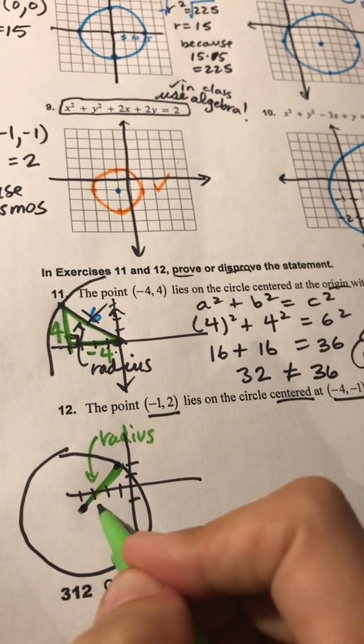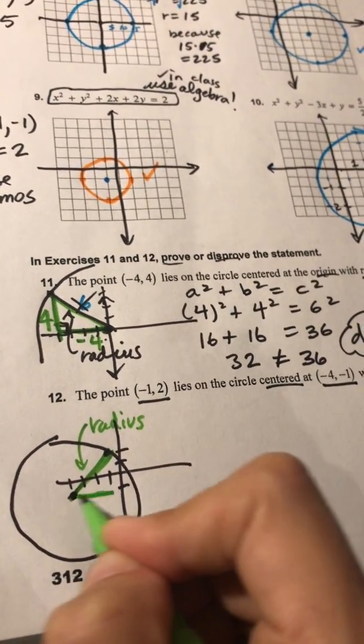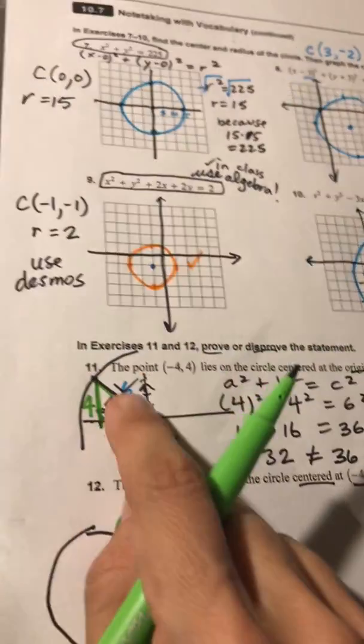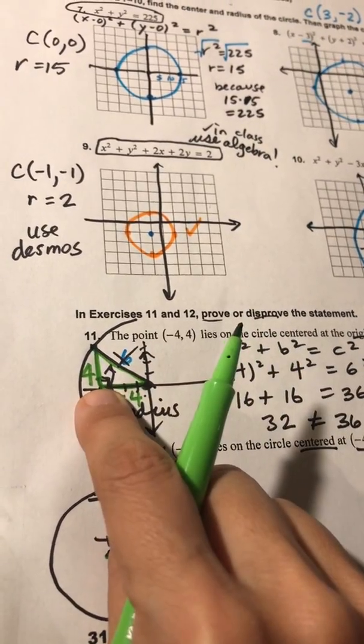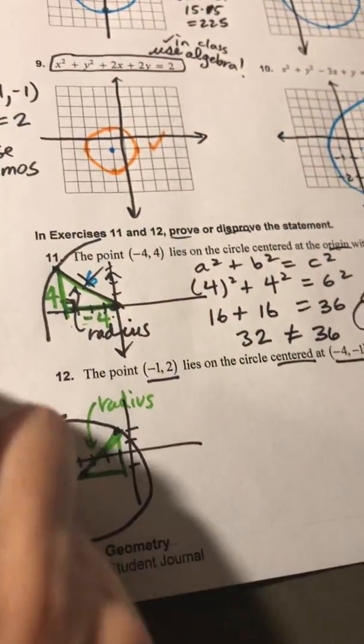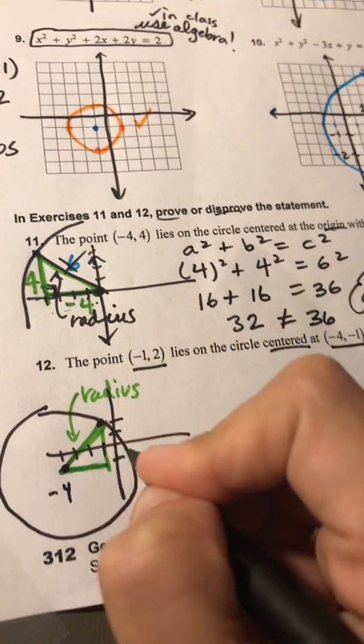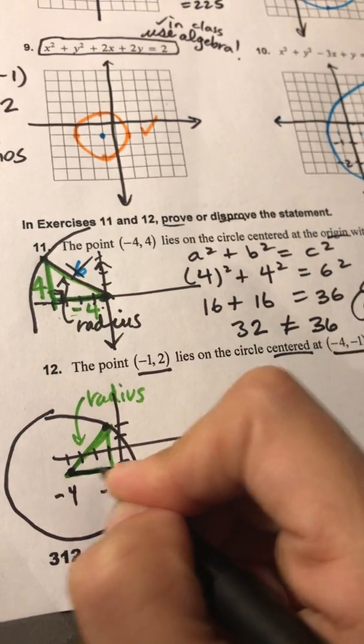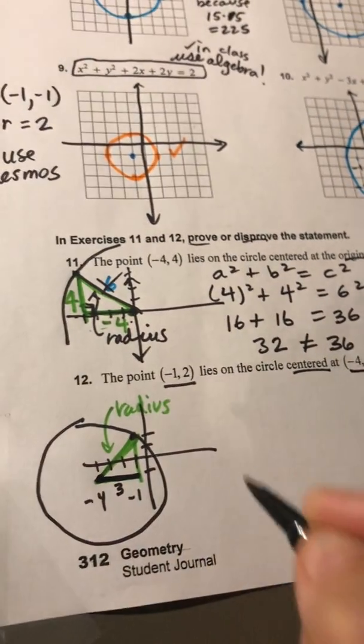So if I had graph paper, I could probably tell you how far apart these are and use the same kind of idea here. It was easier here because we started at the origin. So I knew this went back 4, up 4. Here, I'm at the point negative 4 on my grid, and here I'm at the point negative 1 on my grid. So it looks like these are 3 apart.